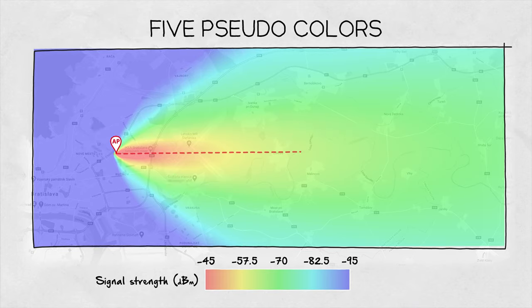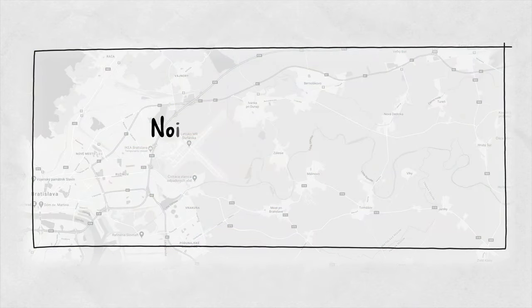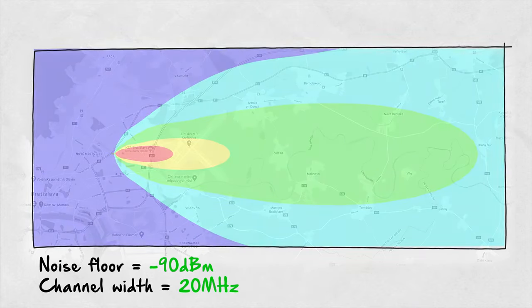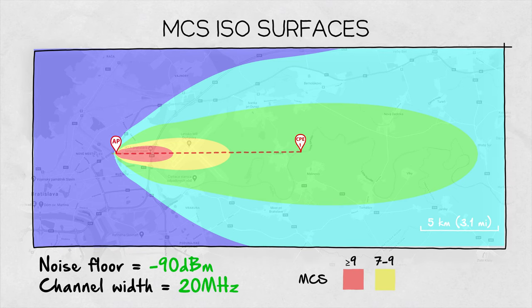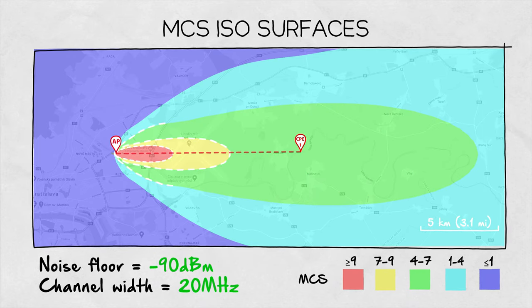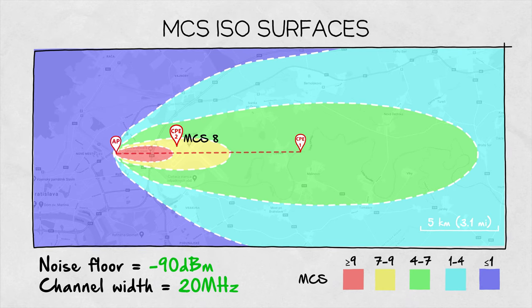And we can go even further. If we know the noise floor level and the width of the radio channel, we can plot MCS isosurfaces. Here, each color corresponds to a range of achievable MCS rates you may know from your radio interfaces. This way, the borders between the areas are very clear and provide a quick and easy reference while designing your next link or optimizing the coverage of an existing one.